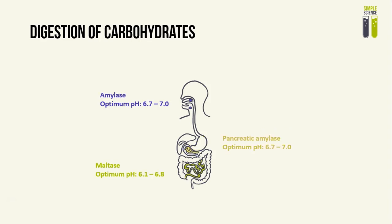Next we have digestion of carbohydrates. The enzyme amylase has an optimum pH of 6.7 to 7.0. It is secreted in the salivary glands, and its job is to break down glycogen or starch into maltose. Next there are the pancreatic amylase enzymes, also with an optimum pH of 6.7 to 7.0. Similarly, it breaks down glycogen and starch, or other similar polysaccharides, into maltose.